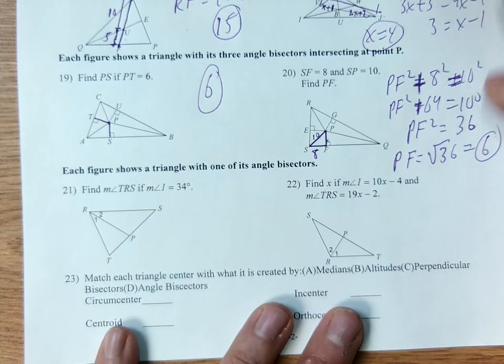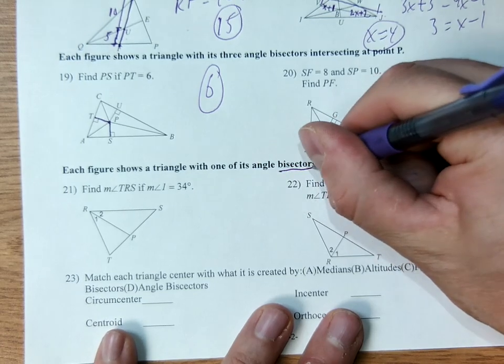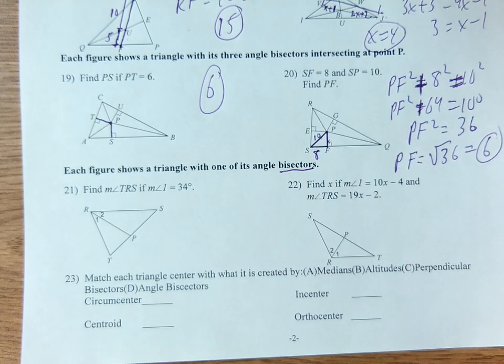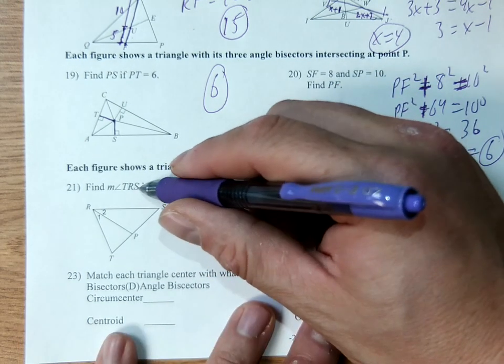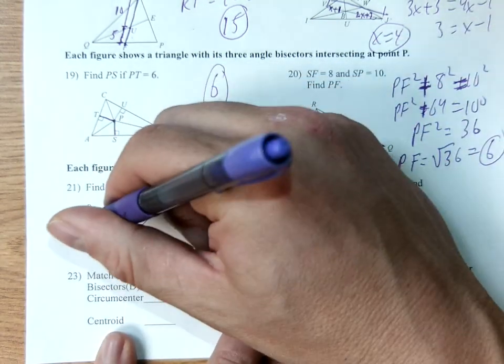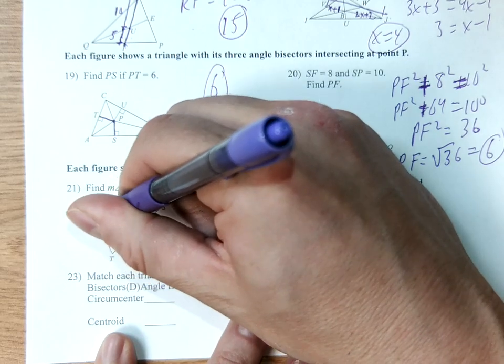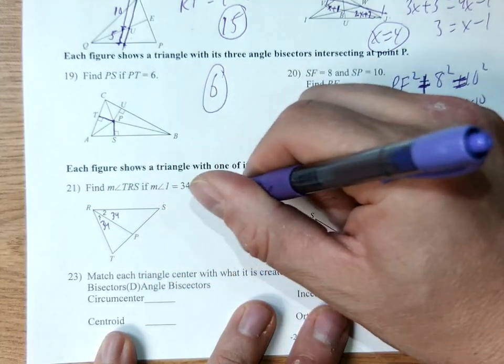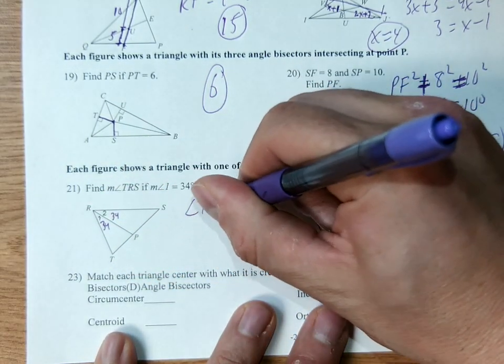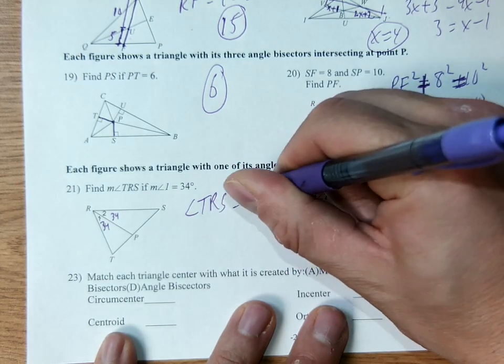Angle bisector. What does bisector mean? Bisector means cuts in half. So what's been cut in half? Angle TRS. TRS is cut in half. So if this is 34, angle 2 is also 34. Angle TRS is equal to 68. Bisector.